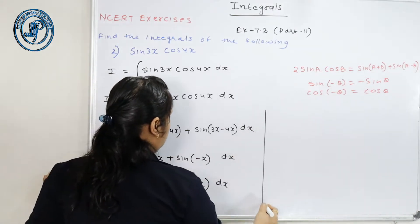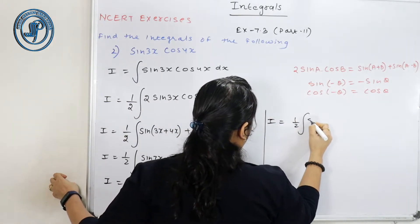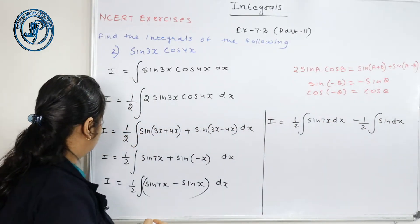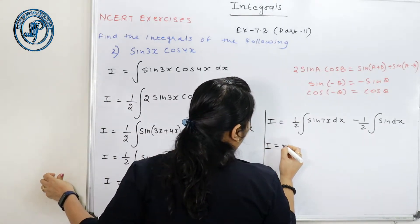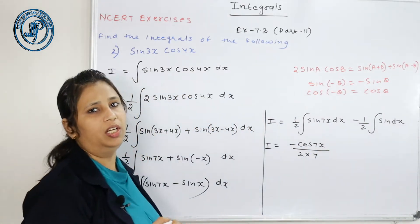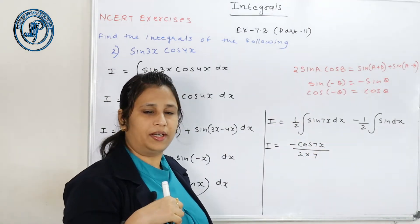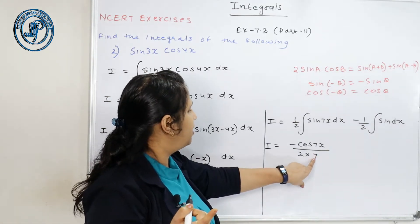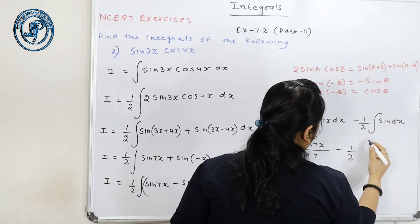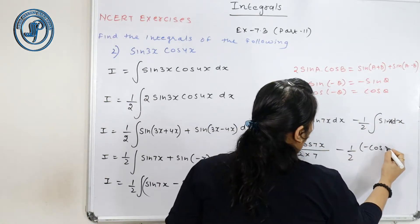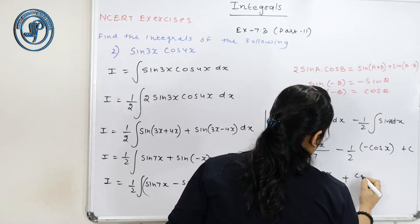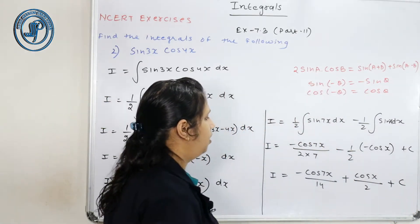I = (1/2)∫sin(7x) dx − (1/2)∫sin(x) dx. sin का integral minus cos होता है। So: −cos(7x)/7 and −cos(x). Final answer: I = −cos(7x)/14 + cos(x)/2 + C.